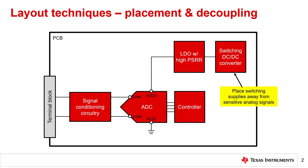Additionally, always use proper supply decoupling. There are two main classifications of decoupling capacitors: bulk and local. Bulk decoupling capacitors are generally placed directly at the output of the supply source. These capacitors help filter the supply output and hold the voltage steady as the load current fluctuates.